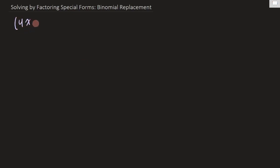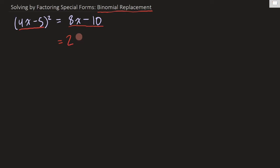So let's set up (4x - 5)² = 8x - 10. There's something that's on my brain that I'm noticing right away that's making me think about this idea of binomial replacement. We've got a binomial here of 4x - 5. You could expand out (4x - 5)² into 16x² - 40x + 25 and bring 8x and 10 to the other side and turn it all into a trinomial. But what do you notice about 4x - 5 and 8x - 10? Hopefully you notice that 8x - 10 is double your 4x - 5. So this is (4x - 5)² on the left and two (4x - 5)s on the right.